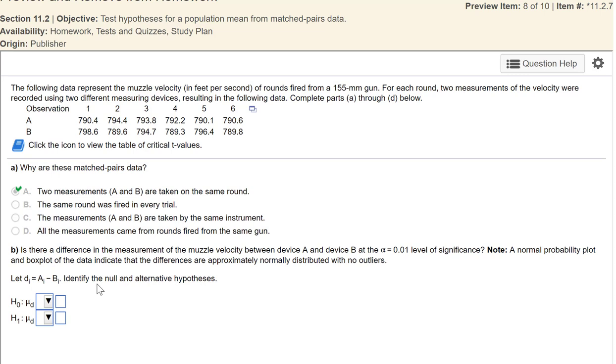Is there a difference in measurement of the muzzle velocity between devices A and B at the 0.01 level of significance? And it says that normal probability plot and box plot of the data indicate differences are approximately normally distributed with no outliers. So there were some underlying assumptions here. And often in textbook type problems, we just sort of brush over those. In reality, you actually have to check these.